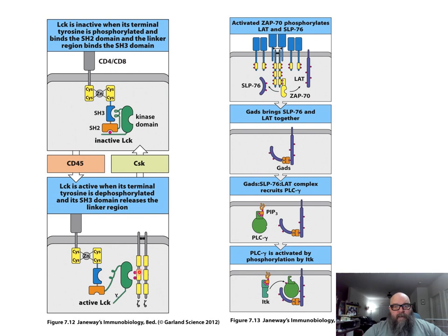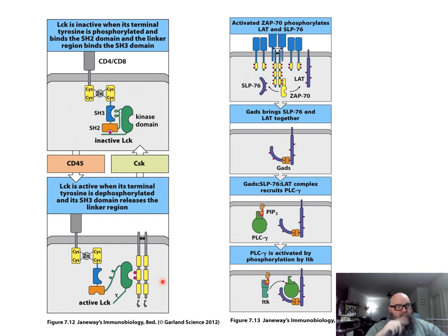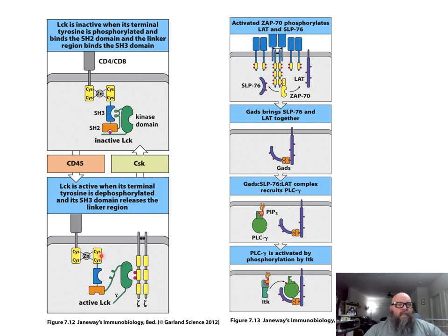LCK will then phosphorylate the ITAMs in its immediate vicinity, activating them at the tyrosine residues, and allows those to start phosphorylating other ITAMs as well. From what I've read — and it's a bit unclear in the textbook, so don't hold me to this — LCK starts phosphorylating the ITAMs, but once it reaches a certain point, they start auto-phosphorylating other ITAMs in their vicinity. So the gamma chain will trigger the epsilon and delta to also start phosphorylating themselves. Once they become phosphorylated, they recruit in ZAP70.